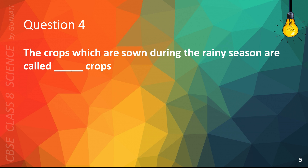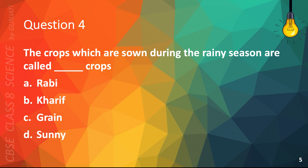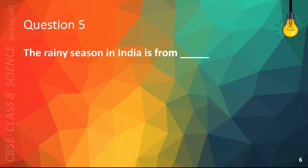Question 4. The crops which are sown during the rainy season are called blank crops. A. Robby, B. Kareef, C. Grain, or D. Sunny. The correct answer is B. Kareef.